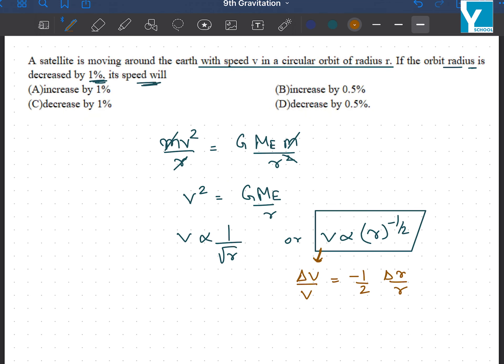And in this case, we know that delta v by v is the percentage change. In fact, we can write it as multiplied by 100 and multiplied by 100. So this whole value is the percentage change, and this whole value is again the percentage change in v.